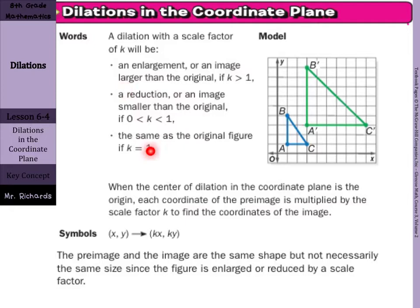Basically what we're going to do is take that k, whatever it is, and multiply it by our x and our y. The pre-image and the image are the same shape but not necessarily the same size since the figure is enlarged or reduced by a scale factor. So with our dilations, we'll either be enlarging, reducing, or keeping the same size.